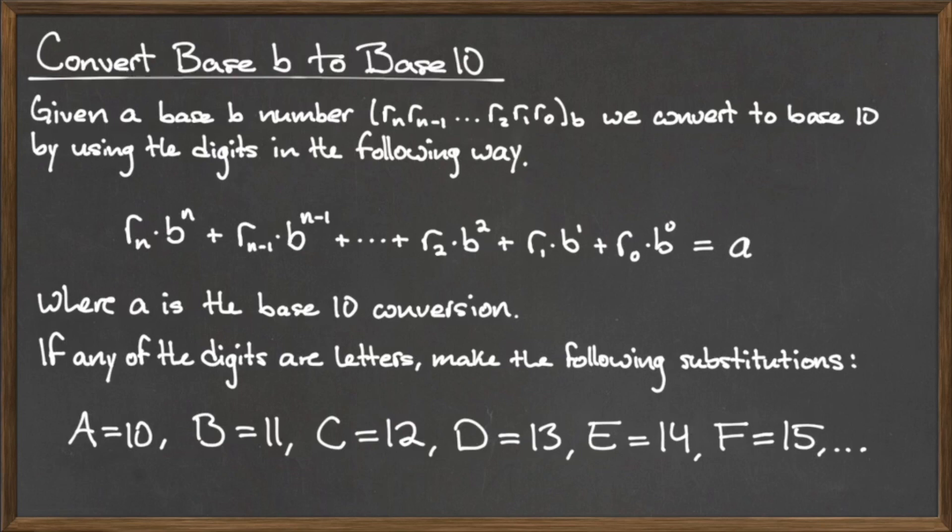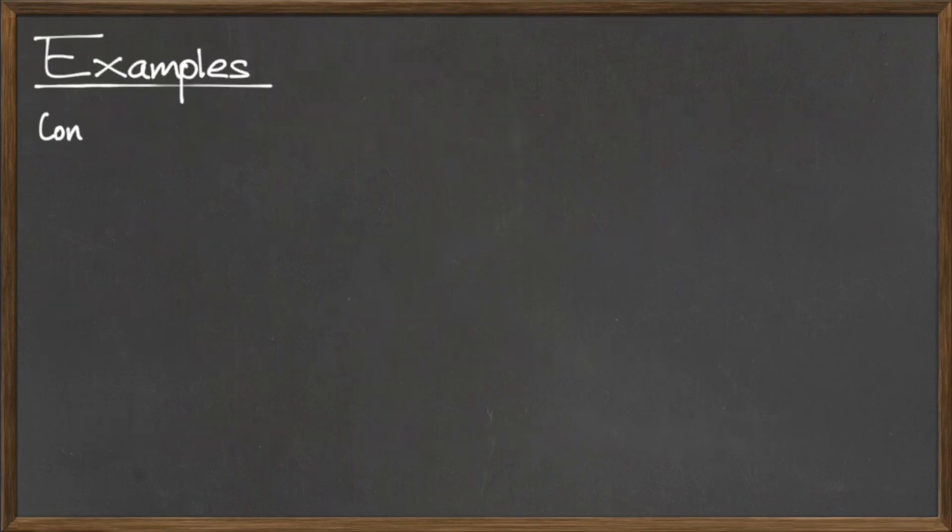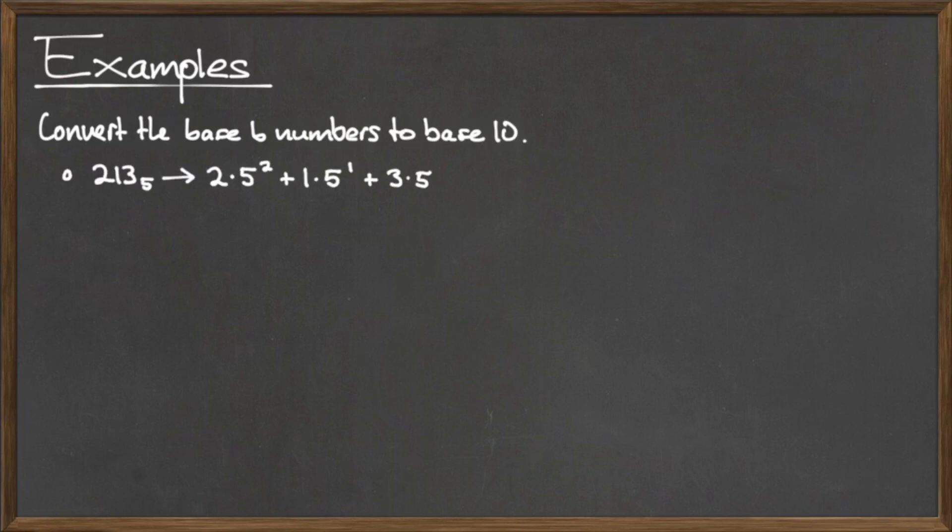To illustrate this conversion process, here are some examples. To convert the number 213 written in base 5 to base 10, we start with the rightmost digit, which is 3, and multiply that by the base 5 to the zeroth power. We add 1 times 5 to the first power, and 2 times 5 to the second power. Simplifying all these values, we see that the number 213 in base 5 is the base 10 number 58.